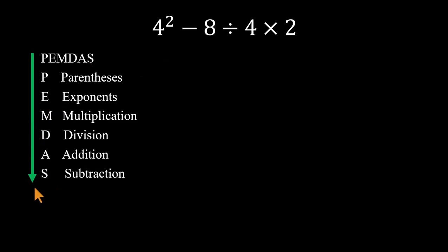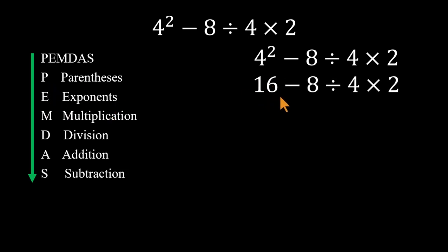And they take that list a little too literally. So here's what happens. They start with exponents. 4 squared is 16. Then they go straight to multiplication. 4 times 2 is 8.